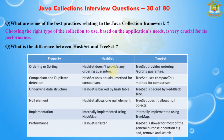The differences can be explained across several perspectives. Ordering: HashSet provides no order guarantee; TreeSet provides ordering and sorting guarantee. Comparison and duplicate detection: HashSet uses equals() for comparison; TreeSet uses compareTo() for comparison. Underlying data structure: HashSet is backed by a hash table; TreeSet is backed by a Red-Black tree. Null elements: HashSet allows one null element; TreeSet does not allow null objects. Implementation: HashSet is internally implemented using HashMap; TreeSet is internally implemented using TreeMap. Performance: HashSet is faster; TreeSet is slower for most general-purpose operations such as add, remove, and search.